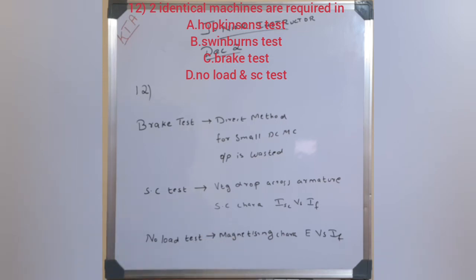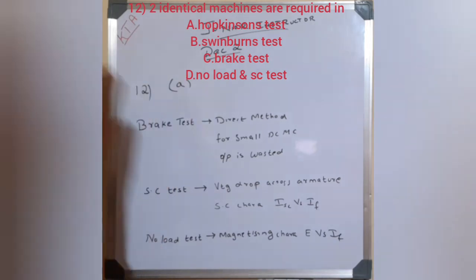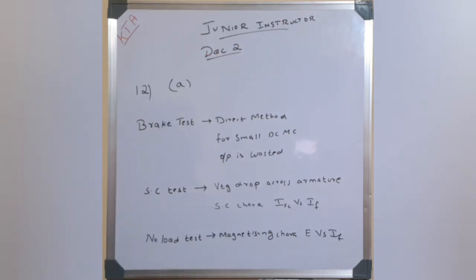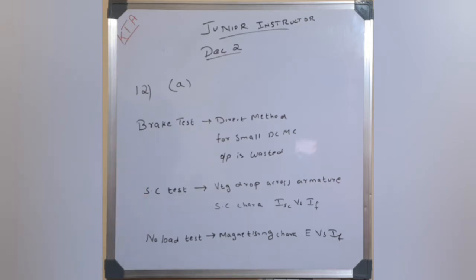Hopkinson's test requires two identical machines. It is mainly used for large or big DC machines. So the available test options for two identical machines are: brake test, Swinburne's test, and regenerative or back-to-back heat run test — and the answer is Hopkinson's test.